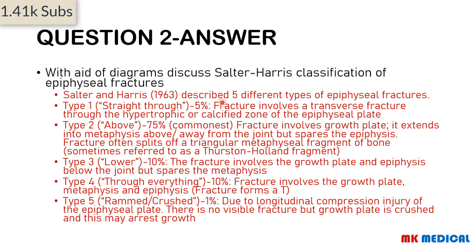Type 1 accounts for 5% of cases: a transverse fracture through the hypertrophic or calcific zone of the epiphyseal plate. Type 2 is the commonest, accounting for 75%: the fracture involves the growth plate, extending into the metaphysis above or away from the joint, sparing the epiphysis. It can split off a triangular metaphyseal fragment known as the Thurston-Holland segment.